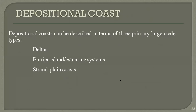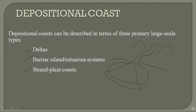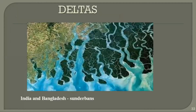Depositional coasts can be further divided into types: we have deltas, barrier islands, and strand plain coasts. A delta forms when a river coming from higher mountains reaches the sea and deposits its sediment in a fan shape. All the sediments carried from higher elevations are deposited here. We also have barrier island and estuary systems, and strand plain coasts.